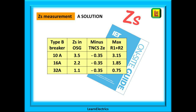I've included a chart to show how using TN-C-S ZE data can help you to prove that your TT system's R1 plus R2 is within sensible parameters. For a 10 amp Type B breaker, the On-Site Guide gives a ZS maximum of 3.5 ohms. ZS minus ZE gives us R1 plus R2, so 3.5 minus 0.35 gives 3.15 ohms for R1 plus R2. If our R1 plus R2 for the 10 amp circuit is less than 3.15 ohms, we have a good result. A 16 amp breaker will have a suggested value of 1.85 ohms, and if our 32 amp circuit is less than 0.75 ohms for R1 plus R2, that is good too. It's easy, it's quick, and it helps you feel confident that your circuit is as good as it can be.